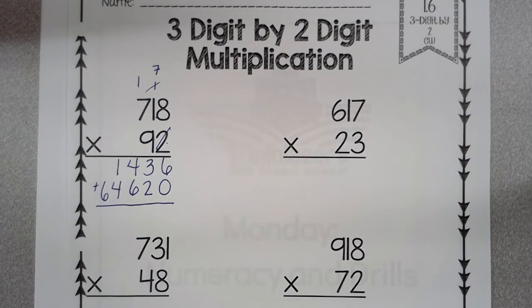Nine times seven is 63 plus one is 64. Now do you see how everything is lined up straight? The ones are in the one columns. The tens are in the tens, hundreds, thousands, ten thousands. They're all in their own column.